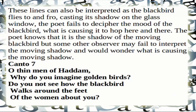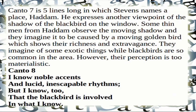Canto 7: 'O thin men of Haddam, why do you imagine golden birds? Do you not see how the blackbird walks around the feet of the women about you?' Stevens names a place, Haddam. Some thin men from Haddam observe the moving shadow and imagine it to be caused by a golden bird — showing their richness and extravagance. They imagine exotic things while blackbirds are so common in the area; their perception is too materialistic.